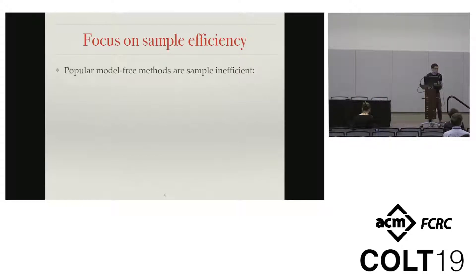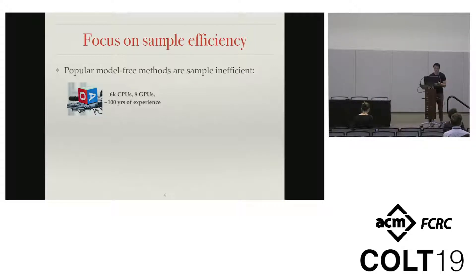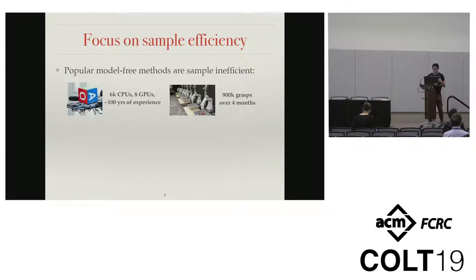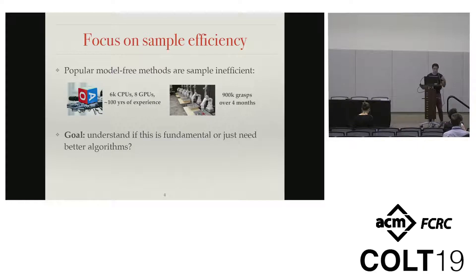It's actually quite well documented in the literature that a lot of these model-free methods are somewhat sample inefficient. The hand example had to collect 6,000 CPUs and eight GPUs to do a lot of simulation — maybe at industry scale this isn't a lot, but for academics you can appreciate the scale. On the other hand, Google Brain's robotic arm project had to do real-world manipulation to collect a million grasps, and that took over four months of continuous time. So these are non-trivial endeavors, and it makes sense to ask: is this really fundamental, or are there better algorithms we should be using?